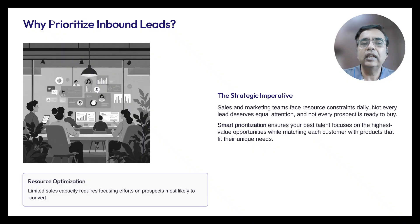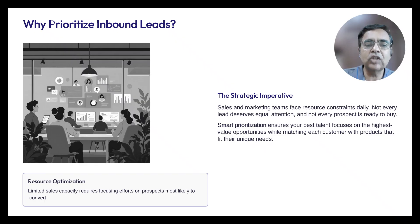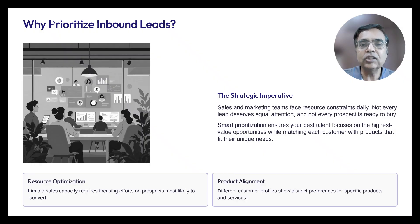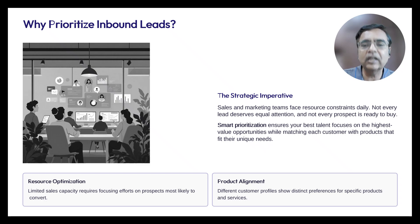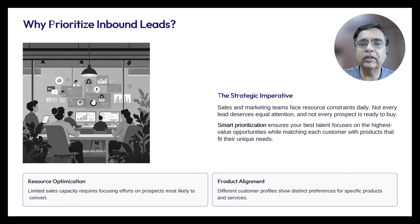The outputs of a lead prioritization system would be, first, resource optimization — limited sales capacity would be channeled to target the best prospects. An additional output would be product alignment, where customer profiles are used to match them to the best possible product. This might not be just a single product, but a rank-ordered list of products they are likely to be interested in.